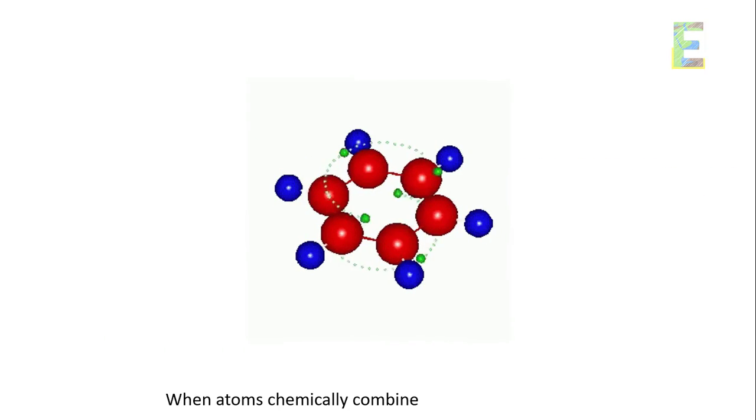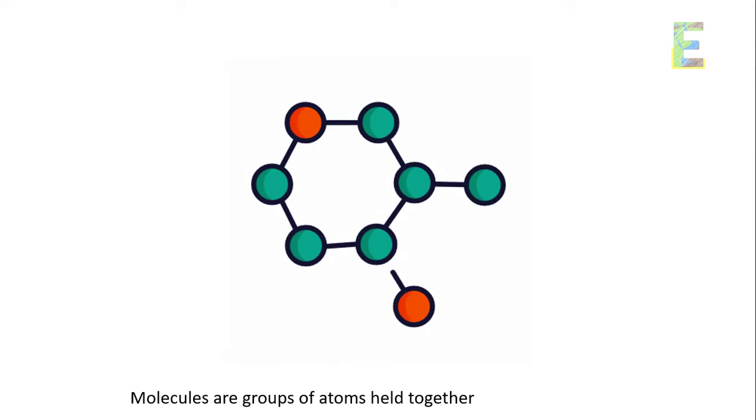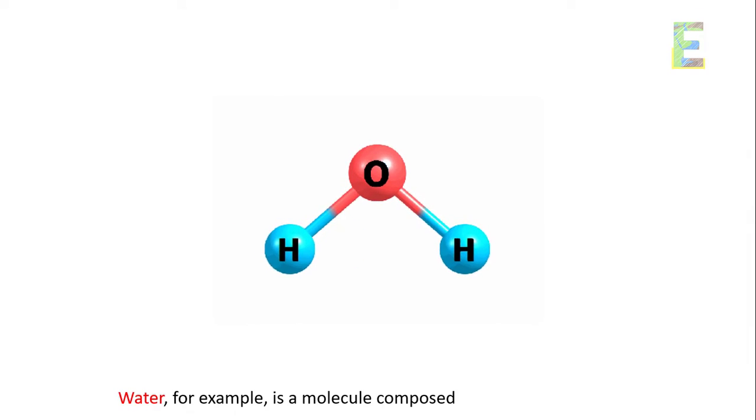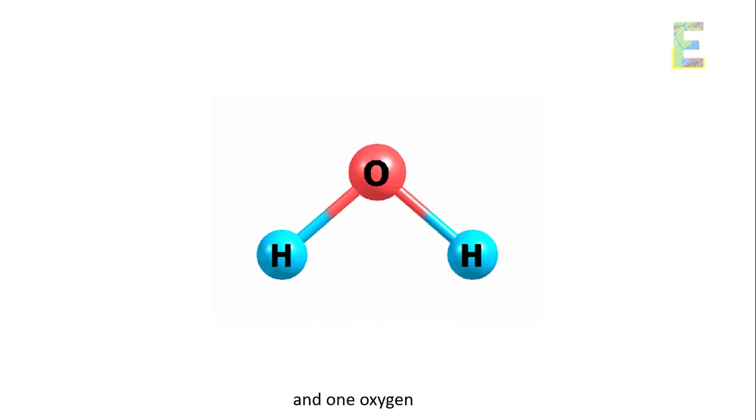Molecules. When atoms chemically combine, they form molecules. Molecules are groups of atoms held together by chemical bonds. Water, for example, is a molecule composed of two hydrogen atoms and one oxygen atom.